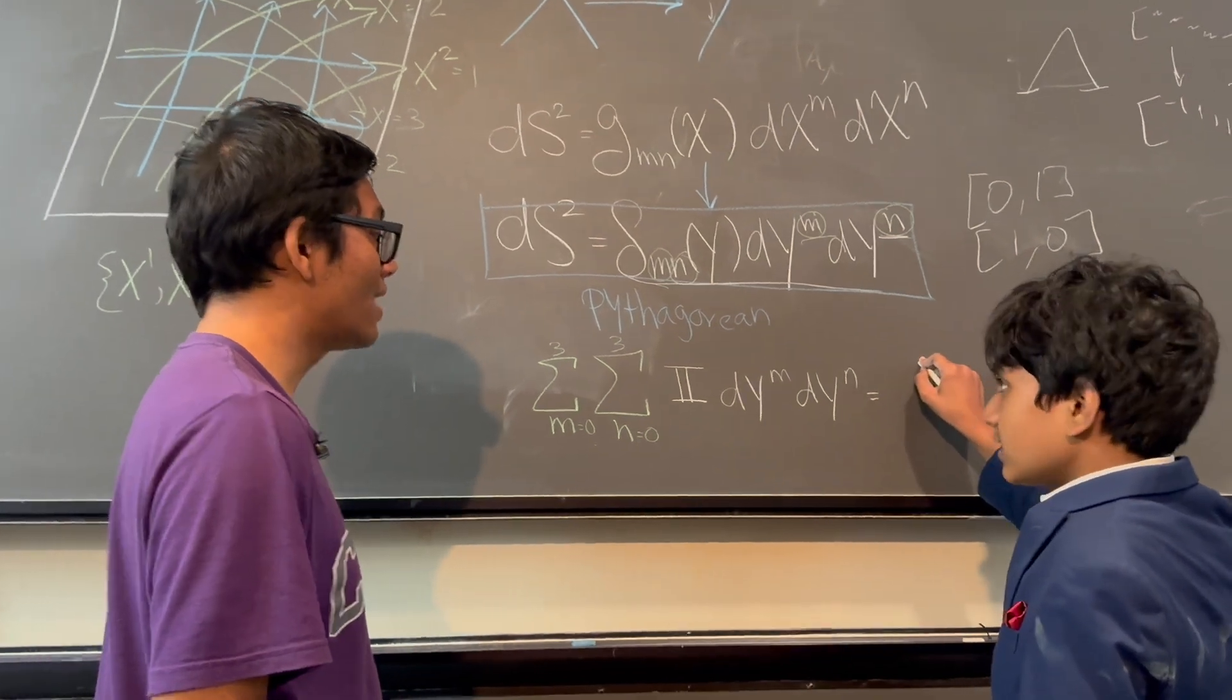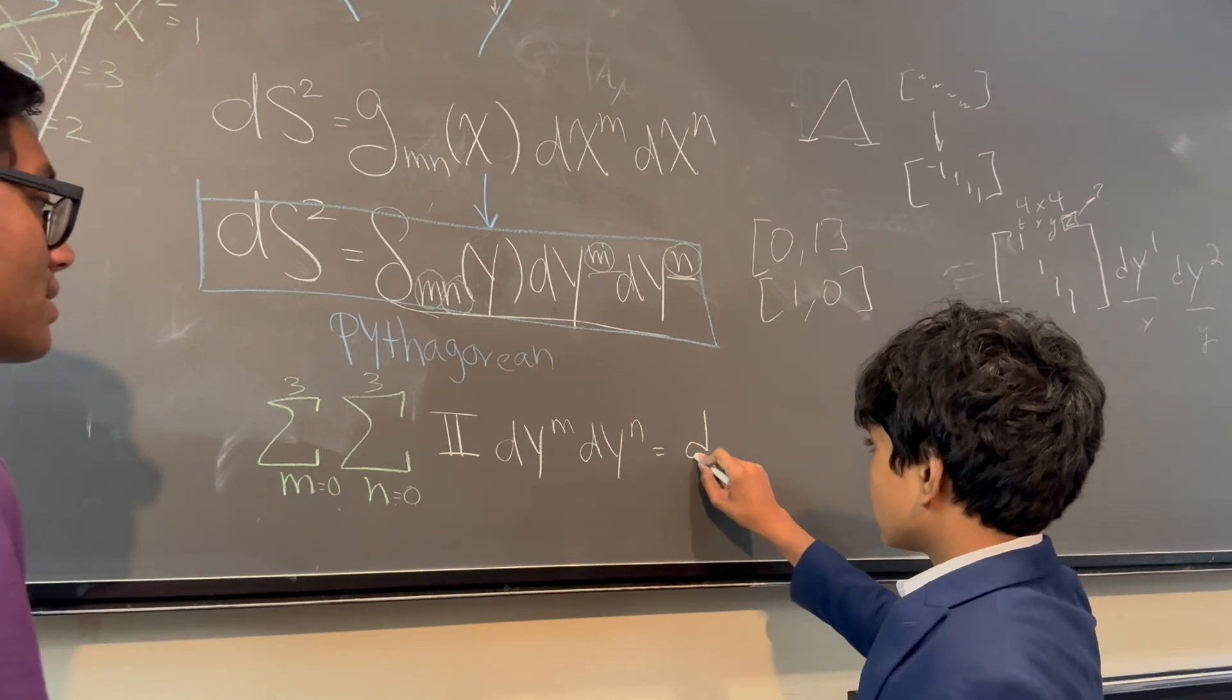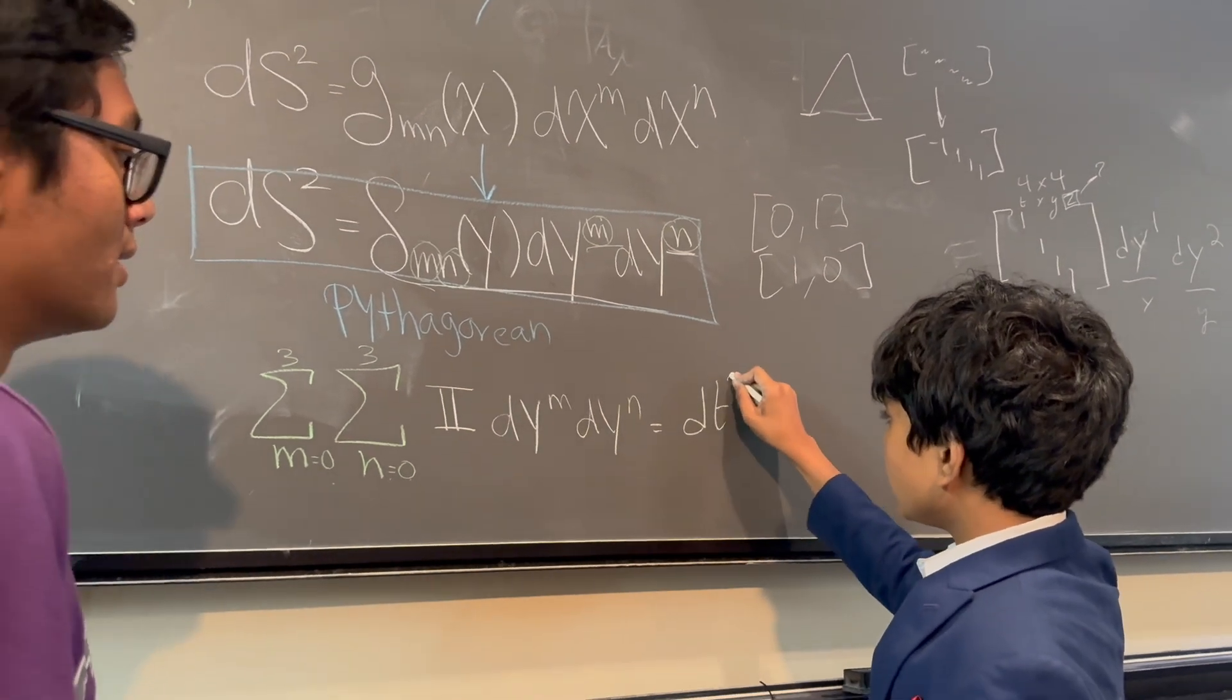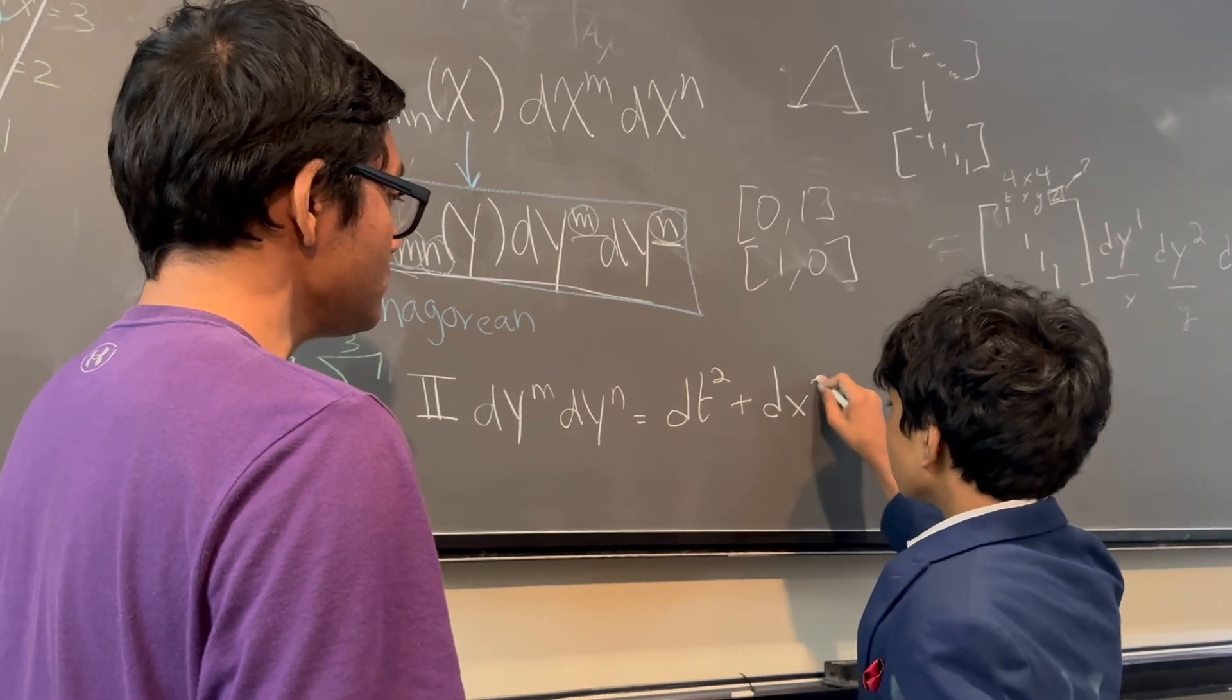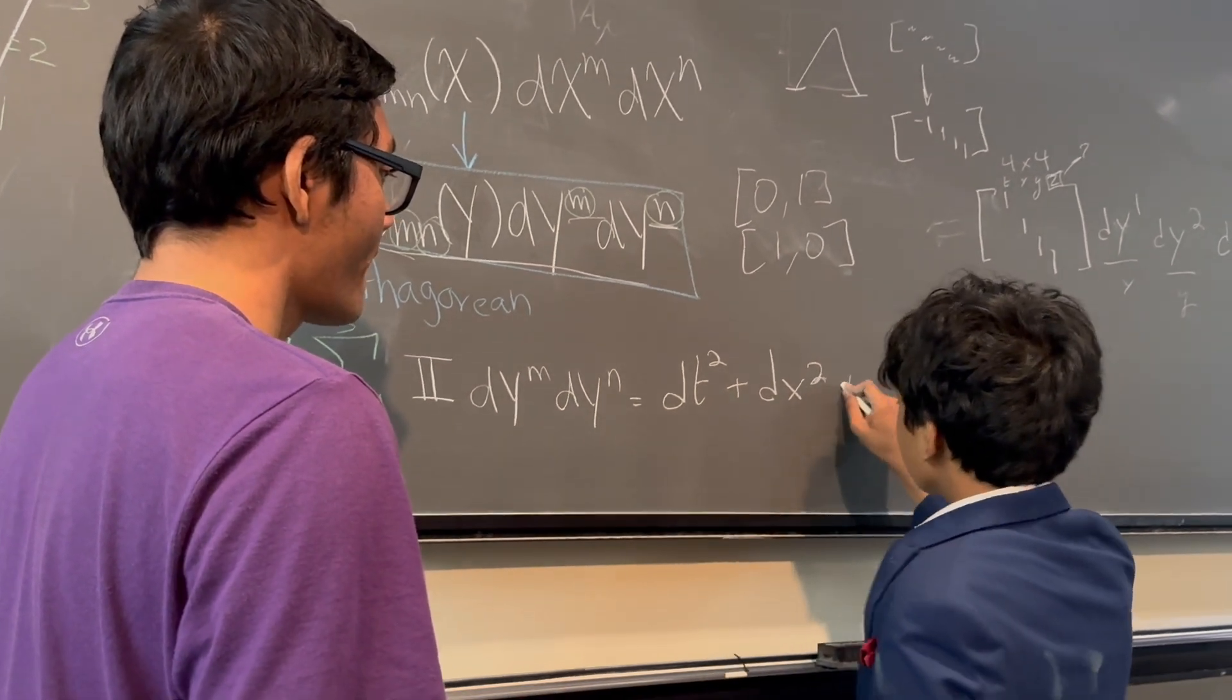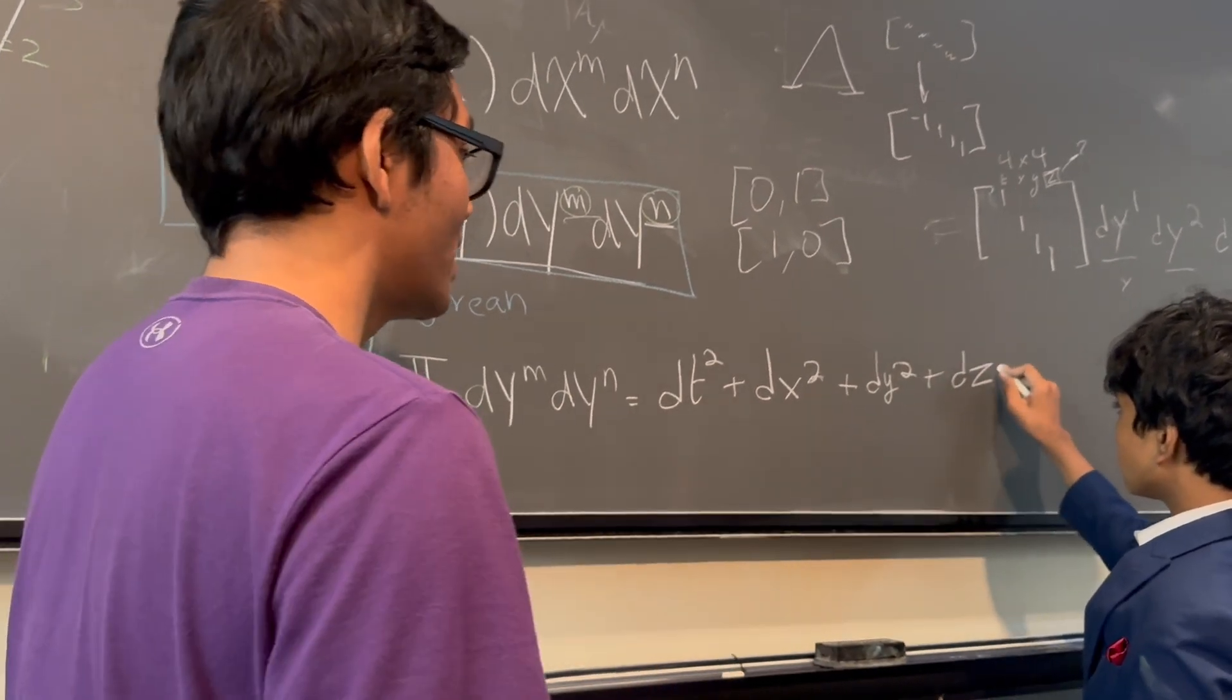All right. So this... If you want, you don't even have to include time. Just include the spatial dimensions. No, it's okay. So wouldn't this give us... Okay. Dt squared plus dx squared, or dx squared plus dy squared plus dz squared? That's absolutely right.